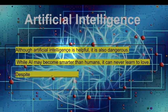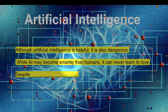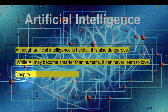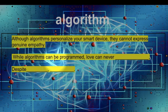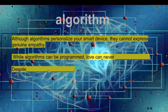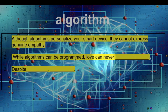Although artificial intelligence is helpful, it is also dangerous. While AI may become smarter than humans, it can never learn to love. Despite the power of AI, love is more powerful. Algorithm: although algorithms personalize your smart device, they cannot express genuine empathy. While algorithms can be programmed, love can never be programmed. Despite the power of algorithms, love is more powerful.